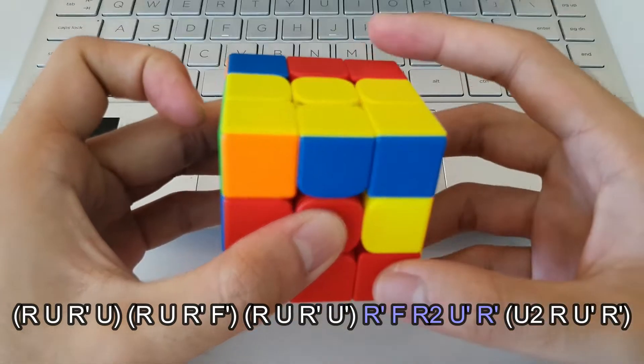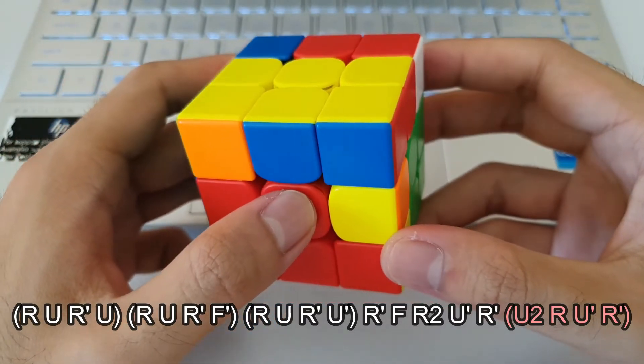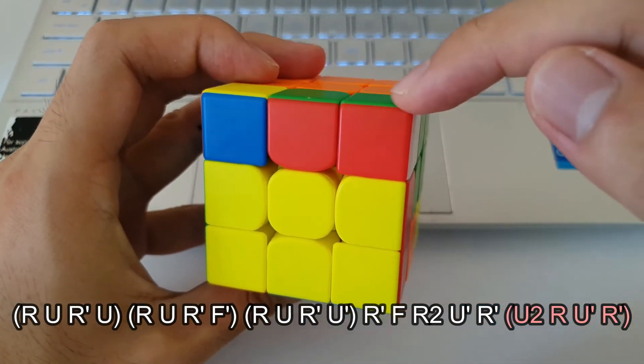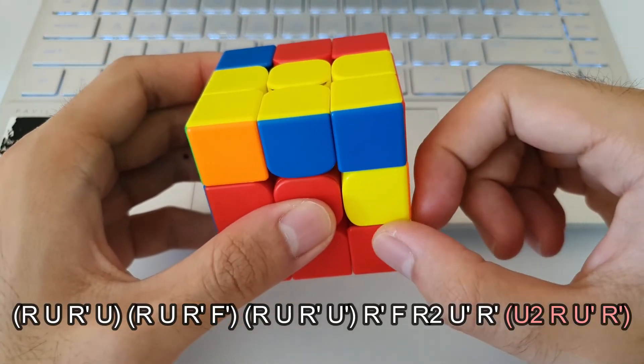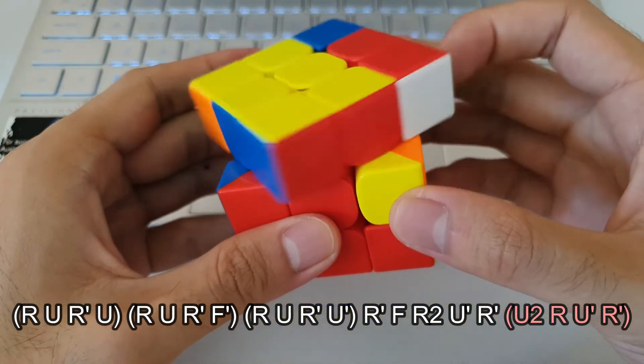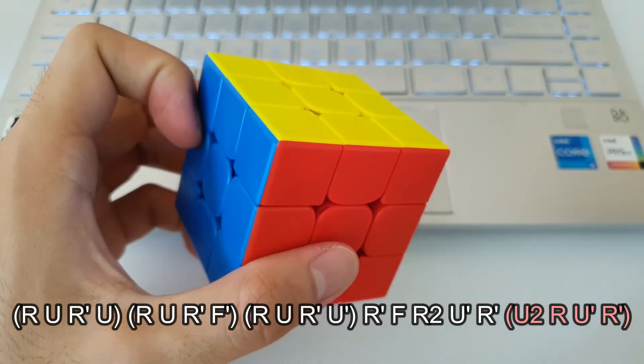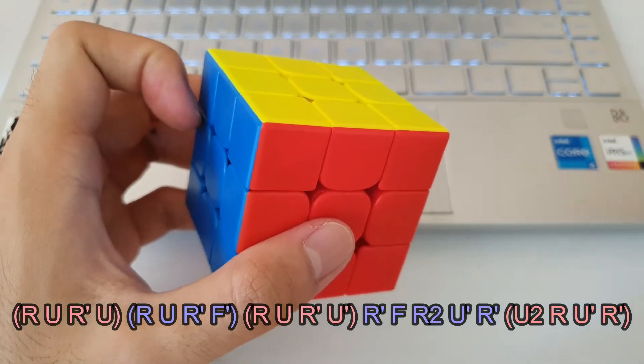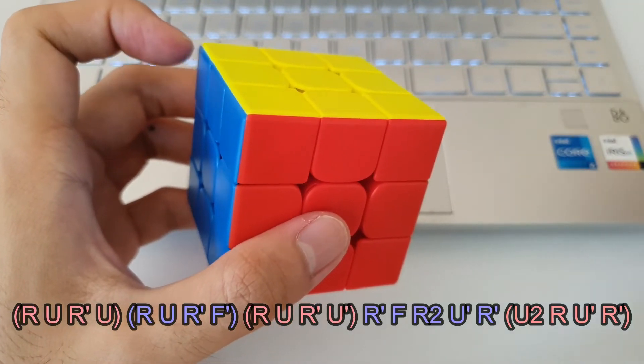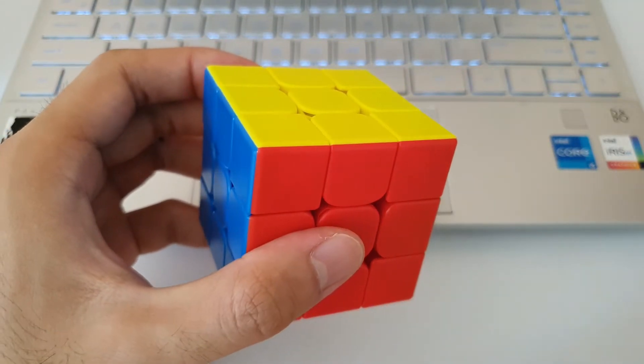Followed by an R'. And now at this stage, instead of remembering the rest of the J-perm, I like to think of inserting this F2L pair into this slot here, just the regular way. In a regular F2L, you would move it to the front and just insert normally. So if you do that, then that actually solves the rest of the algorithm. So you don't need to remember the last few moves, just need to track where the F2L pair is, and you can do that pretty intuitively.